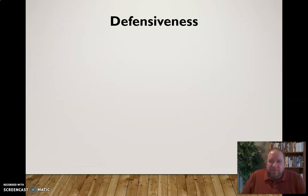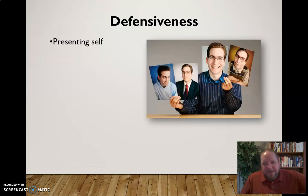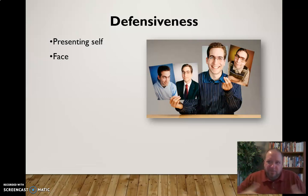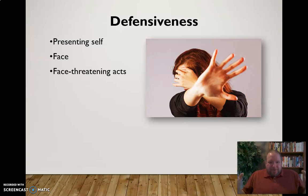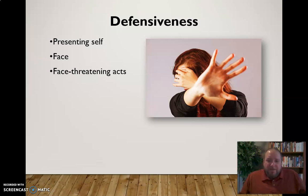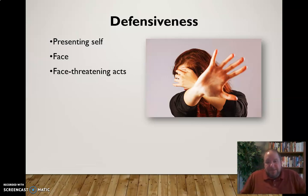Disconfirming messages in different ways can lead to defensiveness. Thinking back to an earlier lesson, we talked about the presenting self — we all have this image we're trying to present, which is called face. When somebody contradicts that with a disconfirming message, that's what we call a face-threatening act. They're coming at us with the intention of contradicting what we're trying to sell with our face — not our physical face, but the image we're presenting. When confronted with a face-threatening act, we tend to get defensive. Face-threatening acts are really the root of much of the defensiveness we see in people.